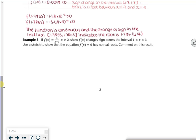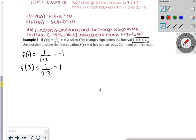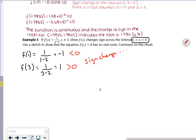So show there's a sign across the interval 1 to 3. So f of 1 will be 1 over 1 minus 2. So that's going to be minus 1. f of 3 will be 1 over 3 minus 2. So that'll be 1. So for all intents and purposes, that's less than 0, that's greater than 0. I've got a sign change. And off I go.